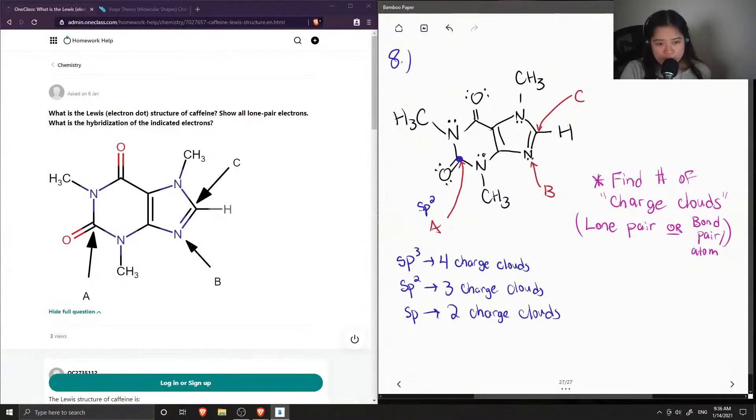Now let's look at B, this is our nitrogen. It has one lone pair and two bonded atoms, so that means it has three charged clouds as well, and it will also be sp2.